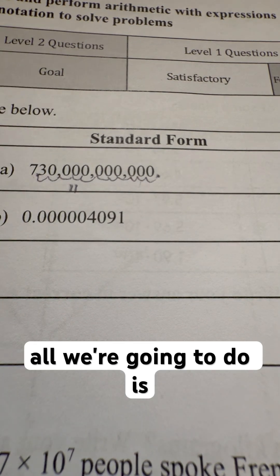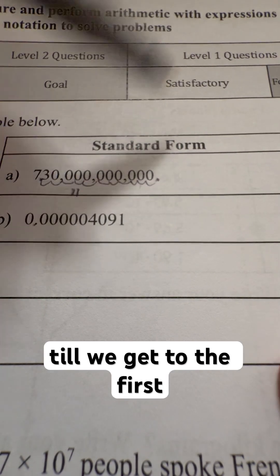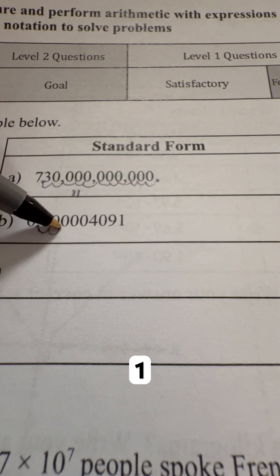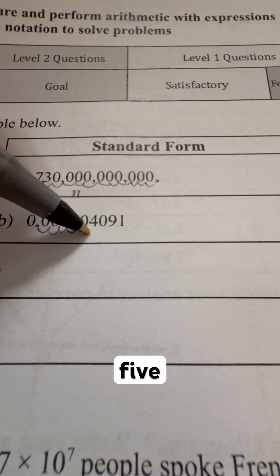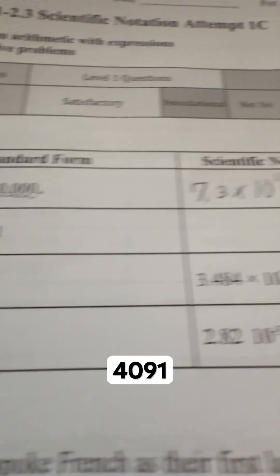So all we're going to do is look for where that decimal is. We see it right here. And we are just going to hop spots until we get to the first real digit that is not zero. So 1, 2, 3, 4, 5, 6. Put a dot right there. There's your decimal. 4.091.